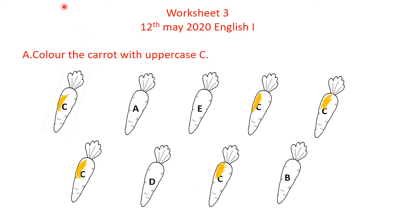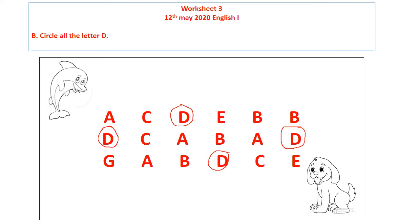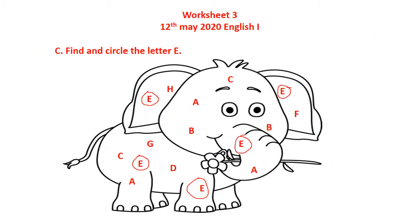Now let's see the next worksheet. Another worksheet to review from yesterday: circle all the letter D. Here is D, D, D, and D. Next, worksheet C asked you to find and circle the letter E. Here is the review — E, E, E, E, and E. Now let's see the worksheet for today's class in the next slide.